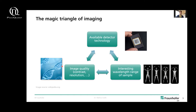And actually this is where quantum imaging comes into play. It tries to break this magic triangle and tries to increase all three points at the same time — so with a given detector technology, make all of the wavelengths available for detection, ideally also with all the requirements on image quality.